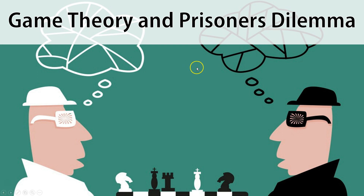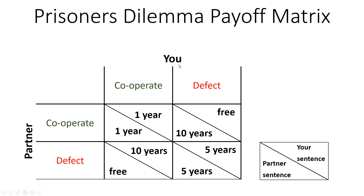Prisoner's Dilemma is a game. It's based on a scenario where the police capture two criminals who are caught doing a minor crime, a crime for which they would do one year in jail. However, these two criminals are also suspected of a larger crime, a crime that would have a 10-year jail sentence. What the police does is divide and conquer.